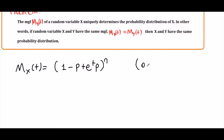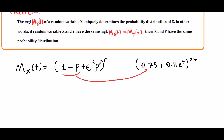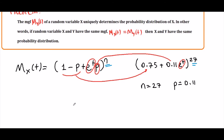In our problem, the exponent is 27, so n = 27. Let's match the pieces: 1 minus p corresponds to 0.75, and p corresponds to 0.11, with e^t matching e^t. So our n is 27 and our p is 0.11. Therefore, x follows a binomial distribution with parameters n = 27 and p = 0.11.